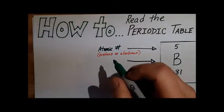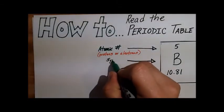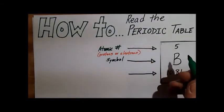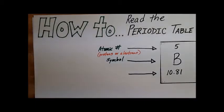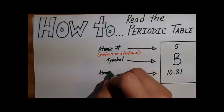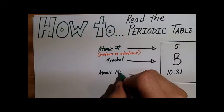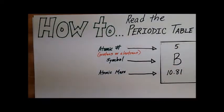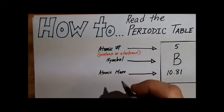In the middle you have the symbol - in this case the capital letter B. Then at the bottom you have the atomic mass. The atomic mass is made of protons plus neutrons.